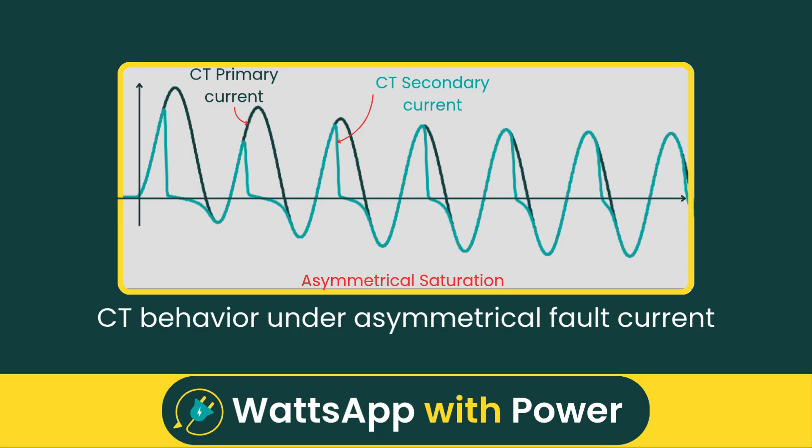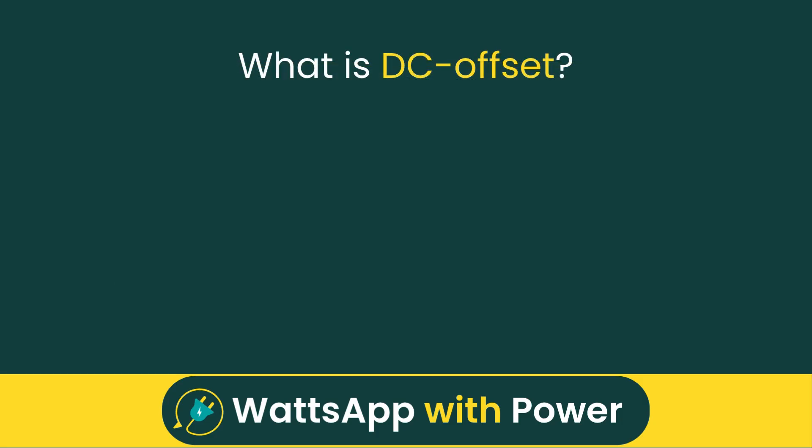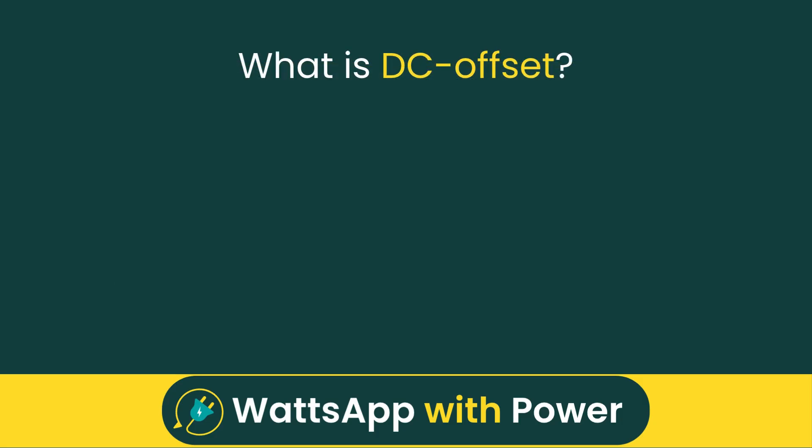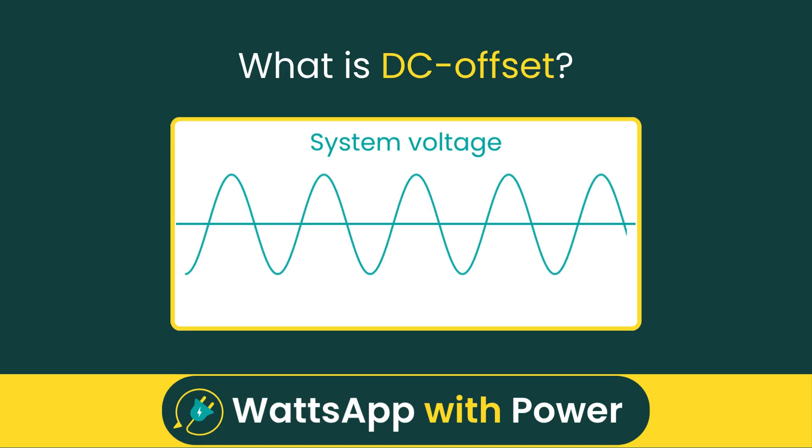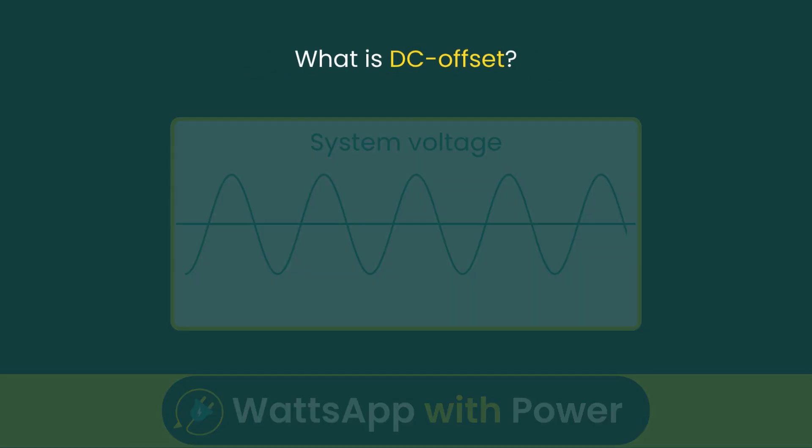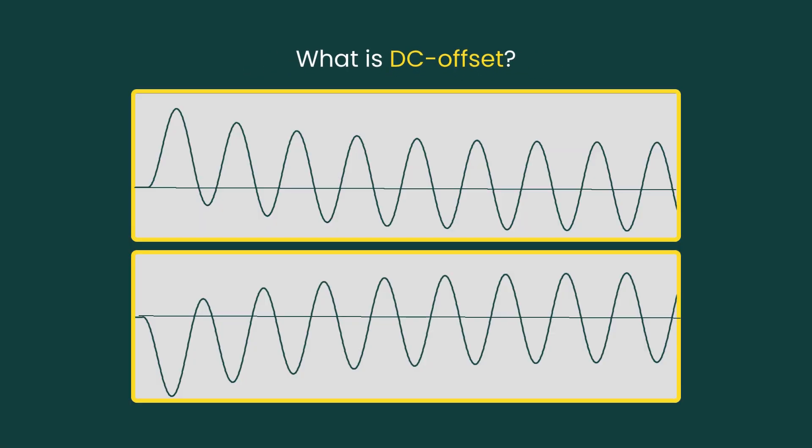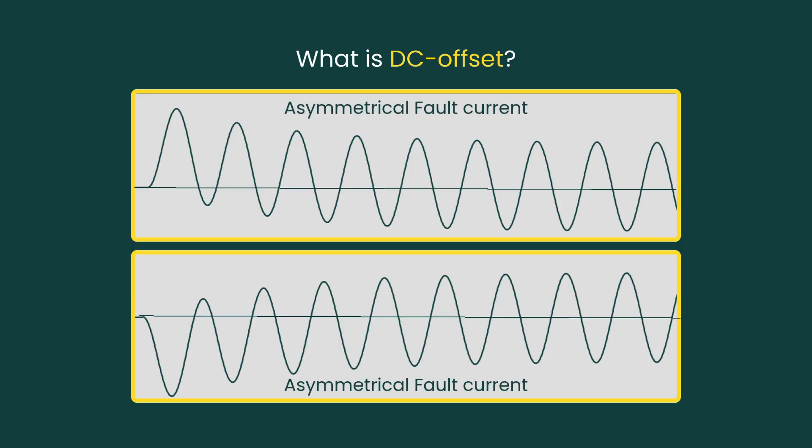Before we dive deeper, let's first understand what is DC offset. DC offset occurs when a fault happens at a point other than the voltage peak, for example, exactly at the voltage zero crossing, especially when the network impedance is mainly inductive. This causes the current waveform to shift upward or downward, resulting in asymmetrical fault current.